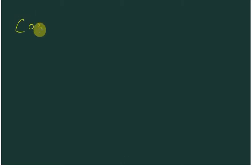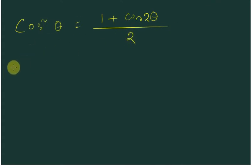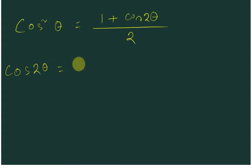There is a trigonometric formula: cos squared theta is equal to 1 plus cos 2 theta, divided by 2. I'll show you how this formula is derived. We know that cos 2 theta is equal to cos squared theta...